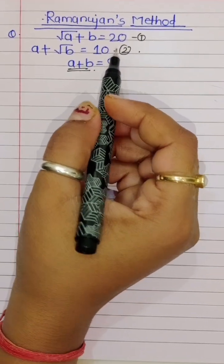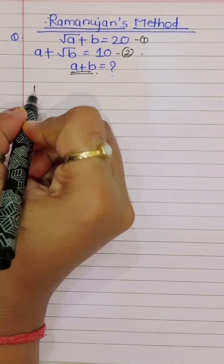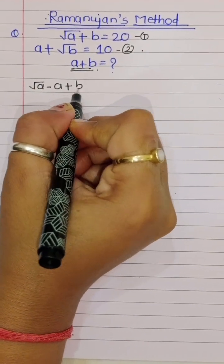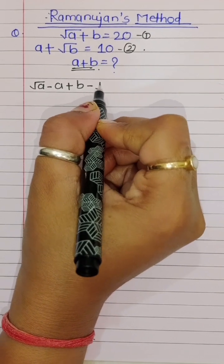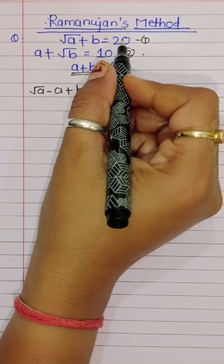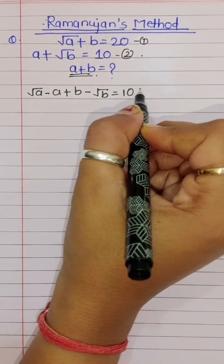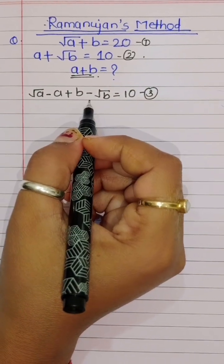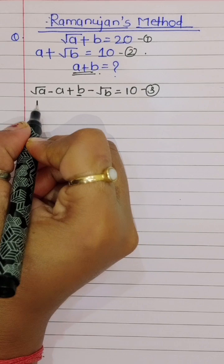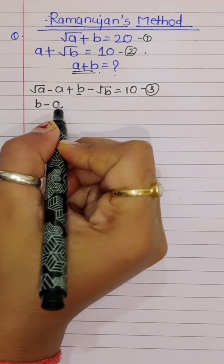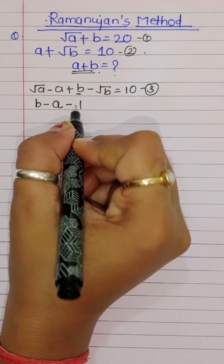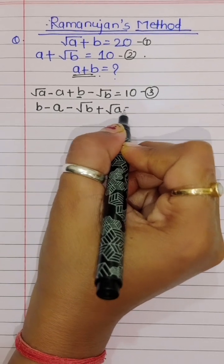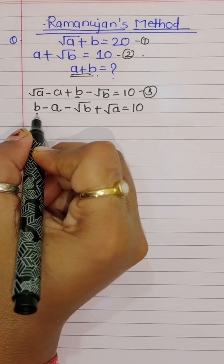Subtracting equation 2 from equation 1, what we get is: square root of a minus a, plus b minus square root of b, is equal to 20 minus 10, which is 10. This is equation 3. Now rearranging this: b minus a minus square root of b plus square root of a is equal to 10.